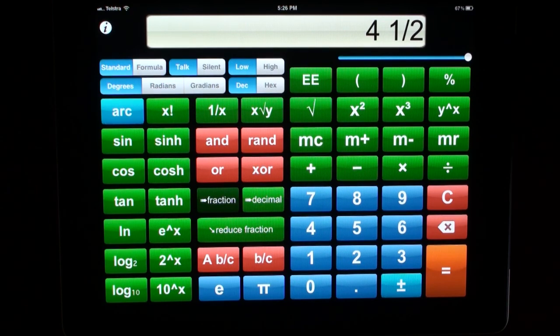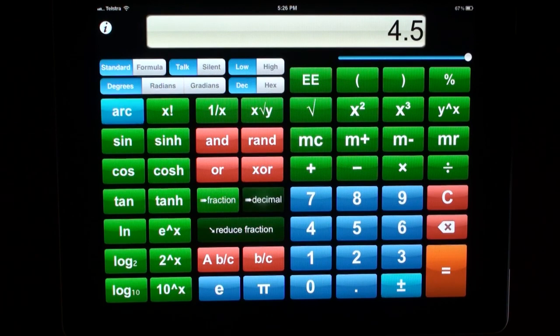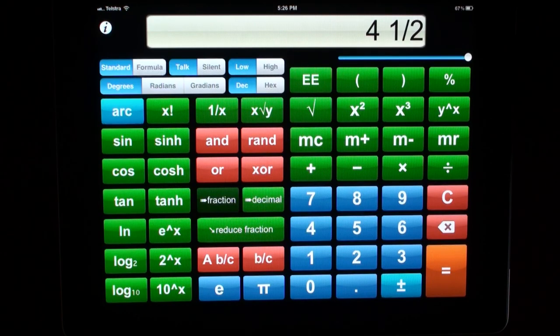Or back into a decimal by pressing the decimal button. Decimal, 4.5. But I think we'll prefer it as a fraction. Fraction, 4 and 1 over 2.